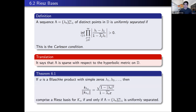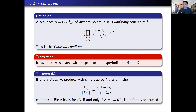What the Carleson condition is saying in a more intuitive sense is that the sequence lambda is very sparse and spread out with respect to the hyperbolic metric on D. An important theorem, which I think is due to Carleson: if U is a Blaschke product with simple zeros lambda_1, lambda_2, etc., then the normalized reproducing kernels corresponding to the zeros comprise a Riesz basis for the model space if and only if the sequence of zeros is uniformly separated. It's a difficult proof but a nice result — we don't get automatic orthonormal bases of reproducing kernels, but we get something pretty close as long as you satisfy the Carleson condition.